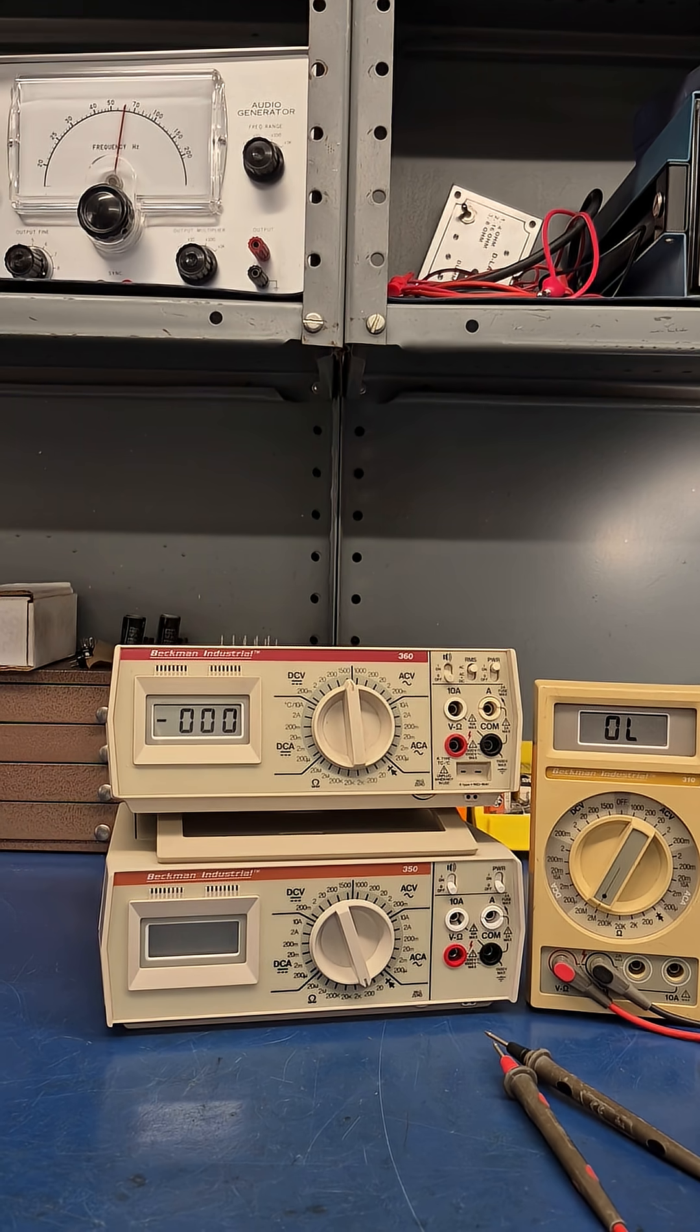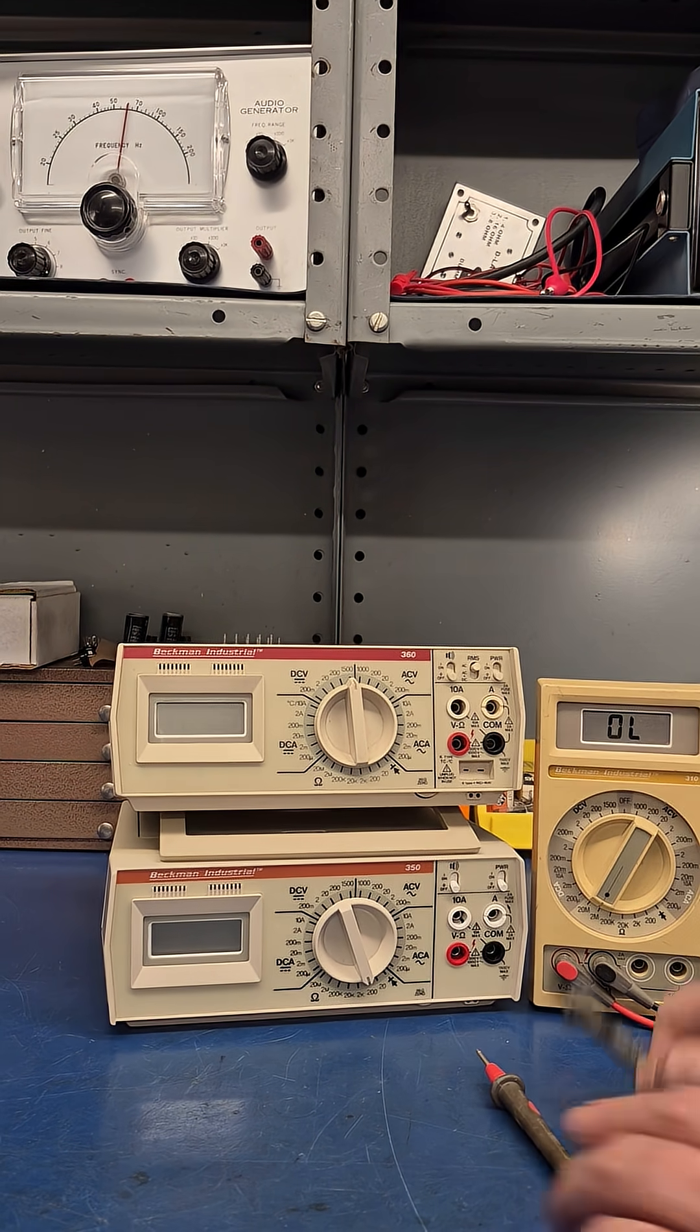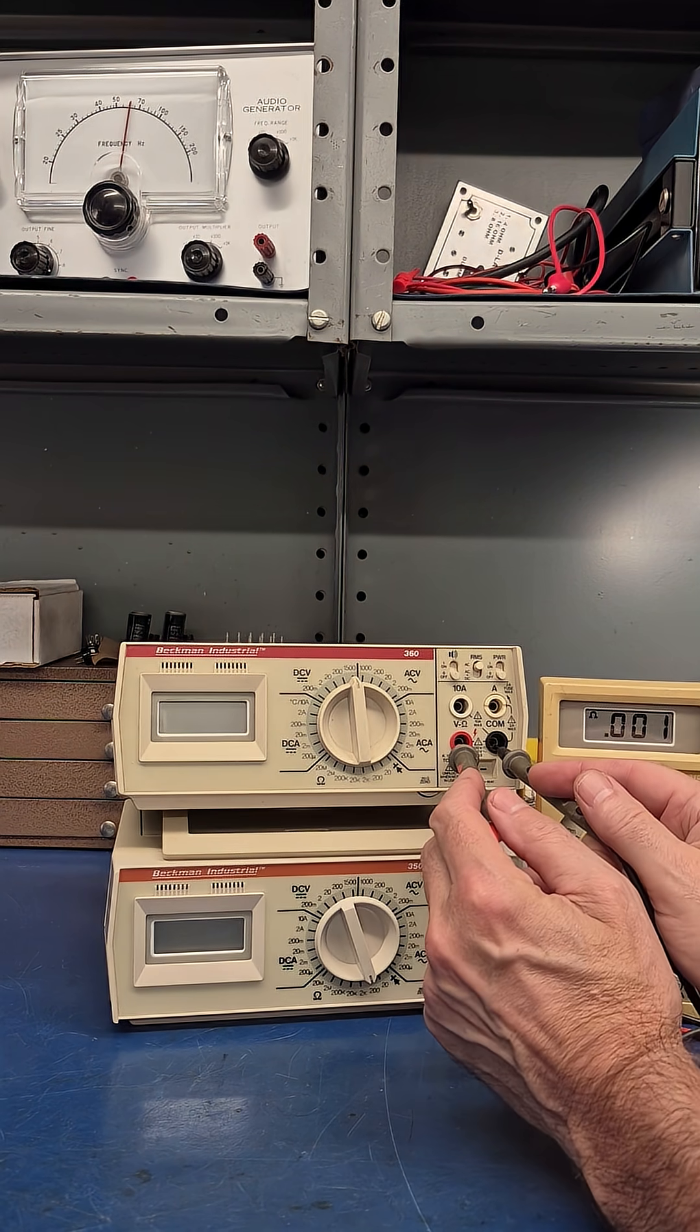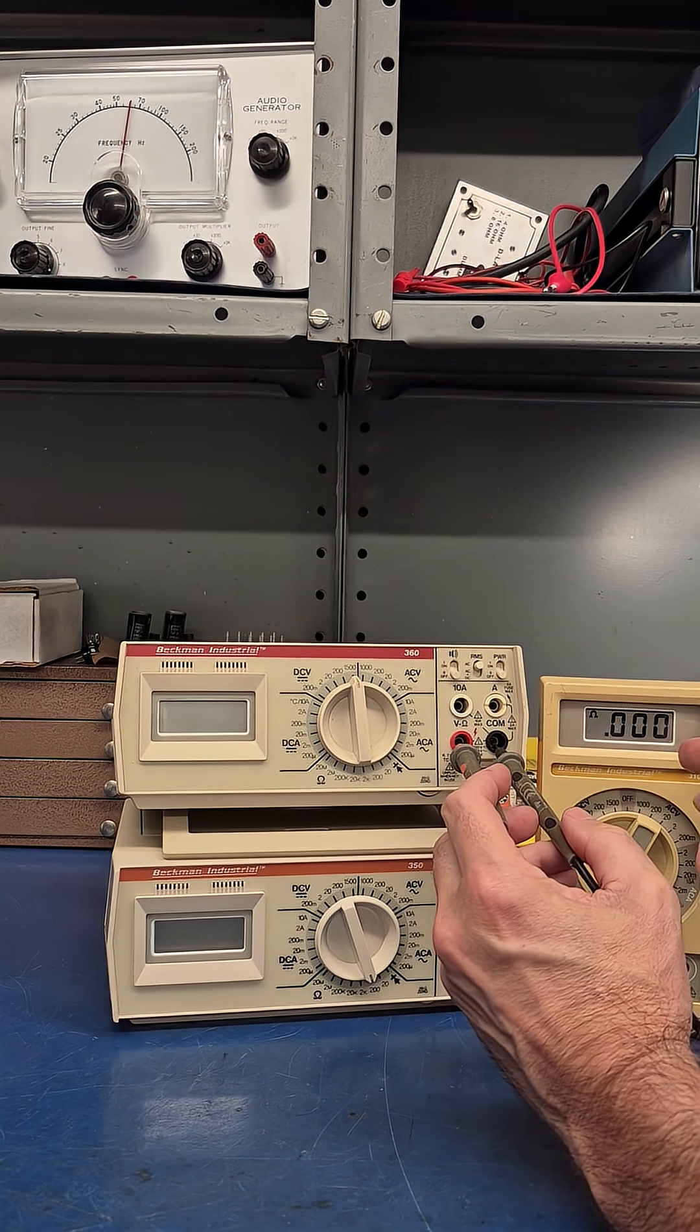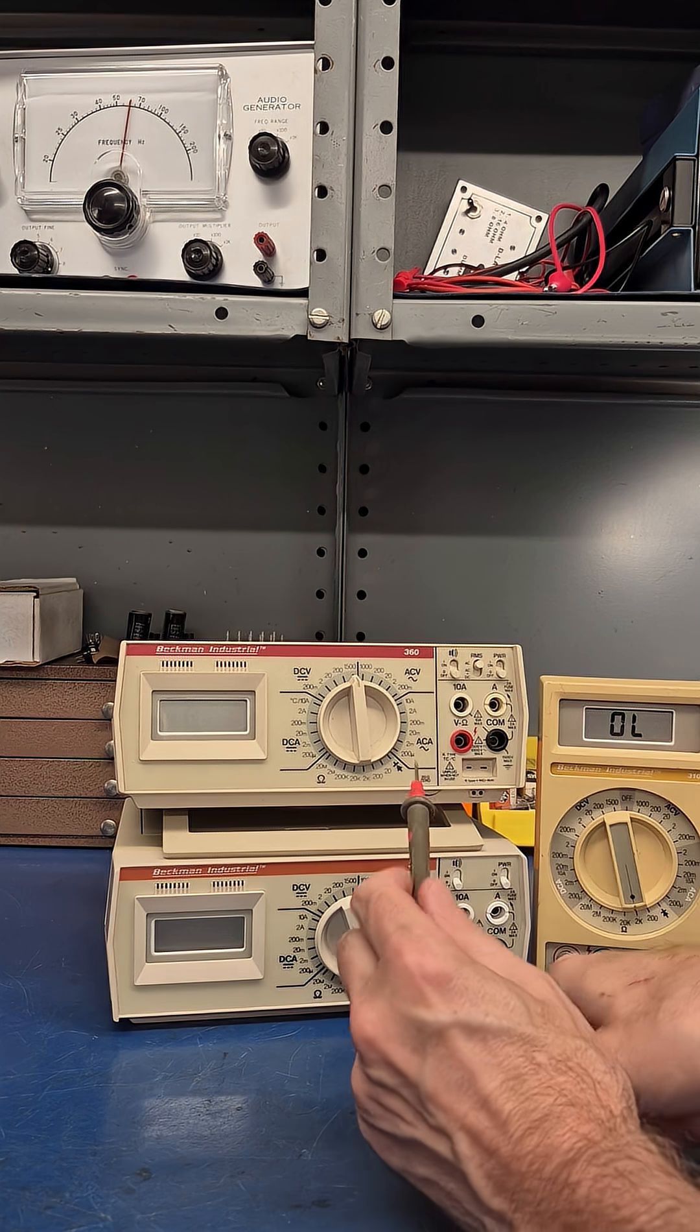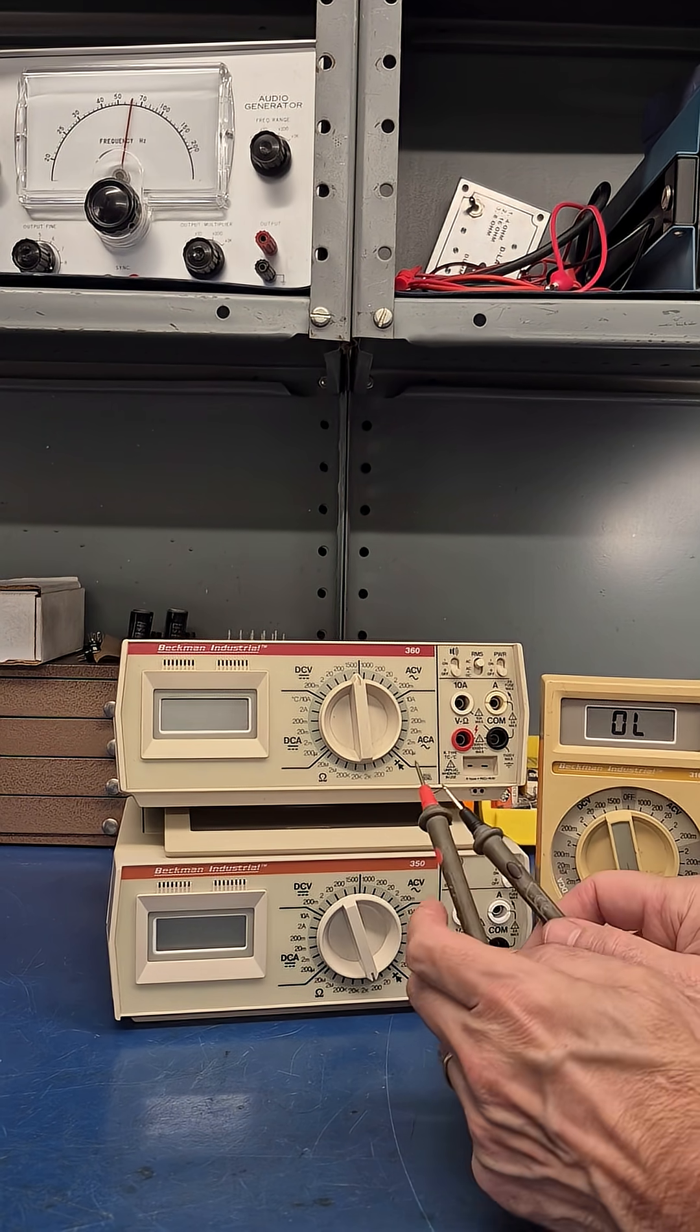So I decided to take another Beckman and troubleshoot this Beckman. I'm going to turn the power off. I took this ohm meter, put it across the input jacks. Look at there, it goes right down to zero. Let me range down to 2K. I've got almost 900 ohms.